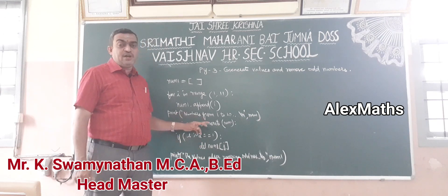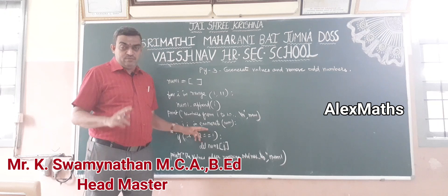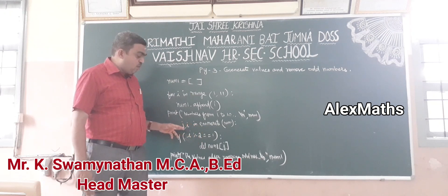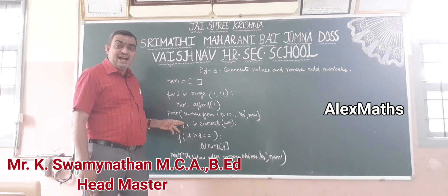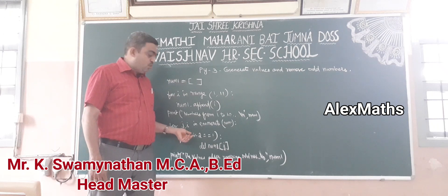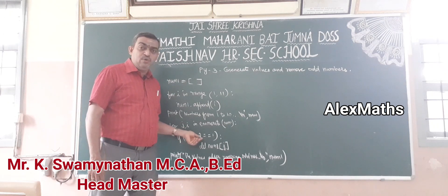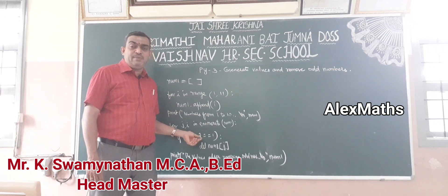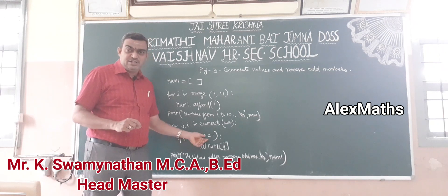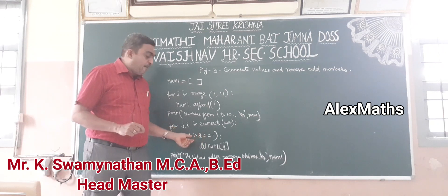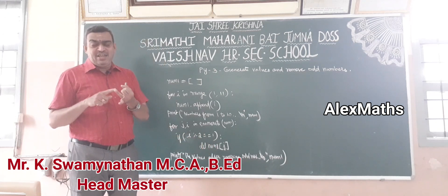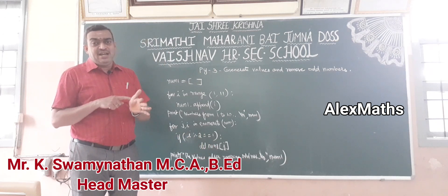Then i becomes 2, and j also becomes 2. We check that value: 2 % 2 returns a remainder of 0. Here we check for 1, so the condition is false and this even element is not removed. The odd numbers 1, 3, 5, 7, 9 are removed using the delete statement.